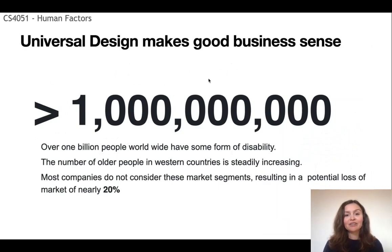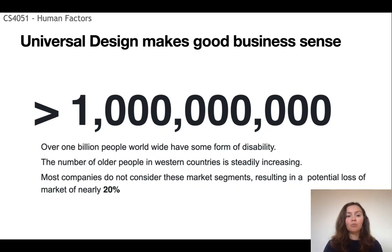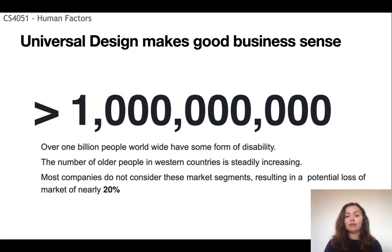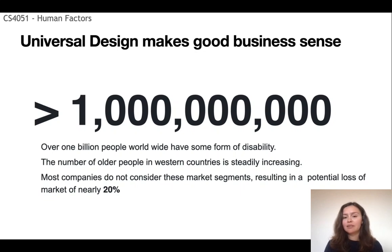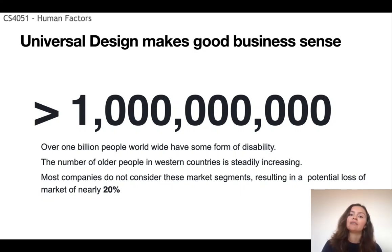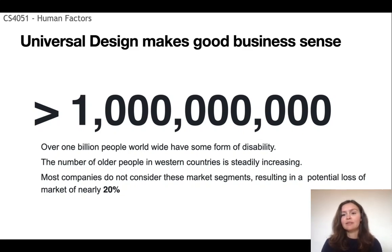Another motivation for universal design is the market and business perspective. Over 1 billion people worldwide have some sort of disability, and as mentioned, the number of older adults in Western countries and globally is increasing. Most companies do not consider these market segments, but it represents a potential loss of nearly 20% of the market. So universal design makes good business sense as well.